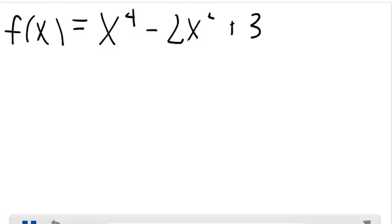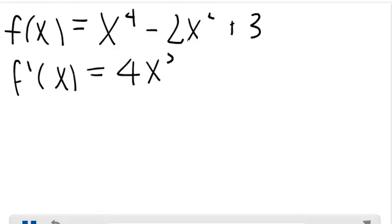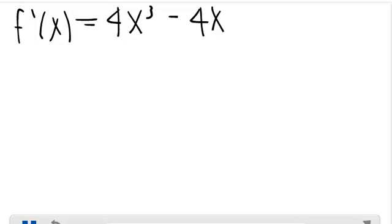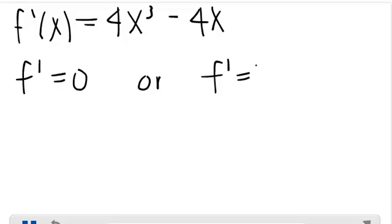The next thing you do is find the derivative of this function. The derivative is 4x³ - 4x. Next, you have to find the critical points. To find the critical points, you have to find when f prime equals 0 or when f prime is undefined. Since f prime is never undefined, we will solve for when f prime equals 0.